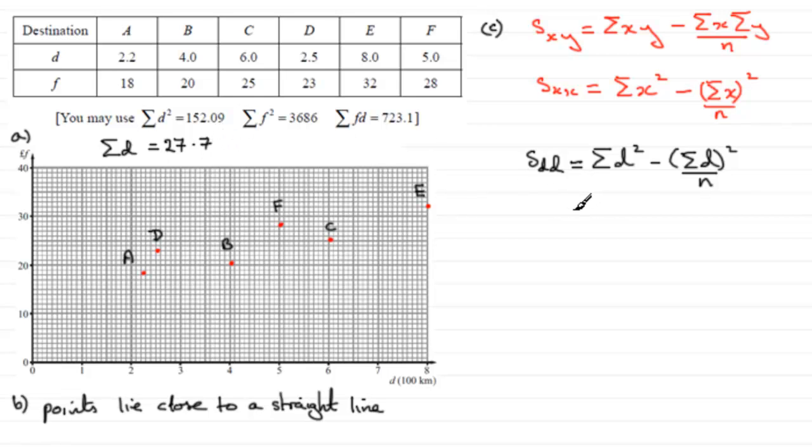So we can now substitute our values into the formula here. Sigma D squared is 152.09. And then we've got minus Sigma D, 27.7, but we need to square all of that and divide it by N.